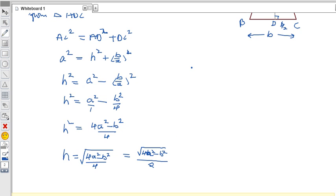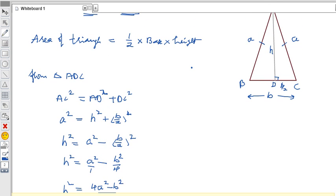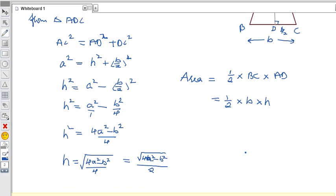Now the area of this triangle is 1/2 × base × height. We'll apply the h value in this area formula. So 1/2 into BC, which is b, and height is AD, which is h. Area = 1/2 × b × h. Substitute the h value in this formula.